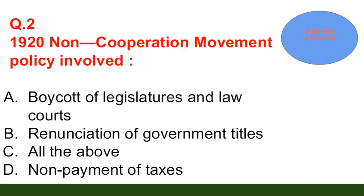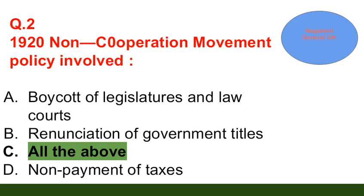Question number 2: The 1920 Non-Cooperation Movement policy involved — option A: boycott of legislatures and law courts; option B: renunciation of government titles; option C: all of the above; option D: non-payment of taxes. The correct answer is option C — all of the above.